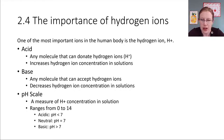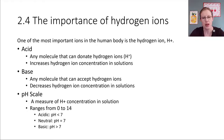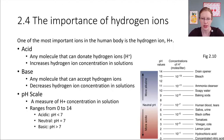Acidic solutions have a pH less than 7. Basic solutions have a pH greater than 7. The pH scale itself only goes from 0 up to 14 — that's the limit. There's a mathematical reason for that, having to do with how the ion concentration is measured. So 0 to 14 is the range of possible pH values.